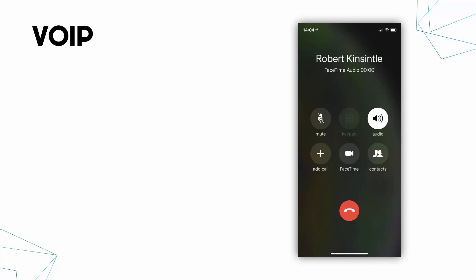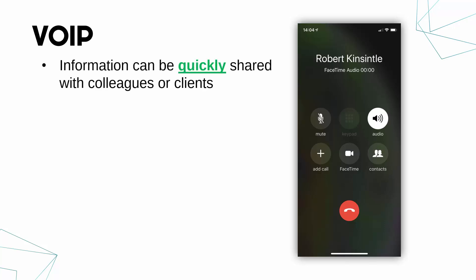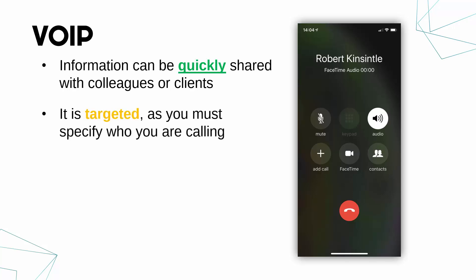In terms of why you might use a VoIP application or phone calls generally: you can quickly share information, just call somebody up and talk to them in real time with no delay. It's also targeted — you specify who you're calling, putting in a number and making sure that person gets the information.